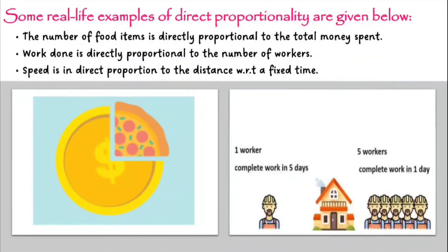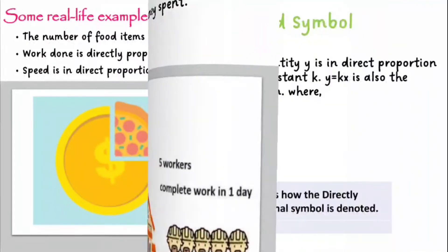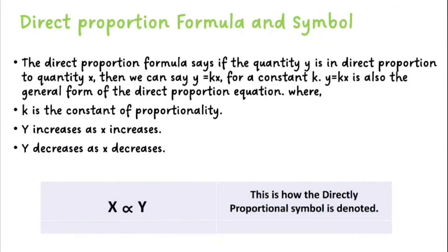Here are a few real-life examples of direct proportionality. The number of food items is directly proportional to the total money spent. The work done is directly proportional to the number of workers. Speed is in direct proportion to the distance, with respect to a fixed time.